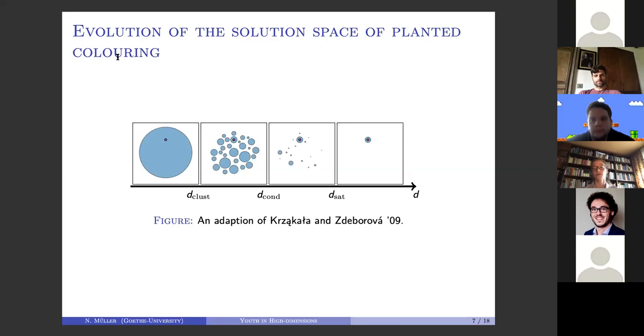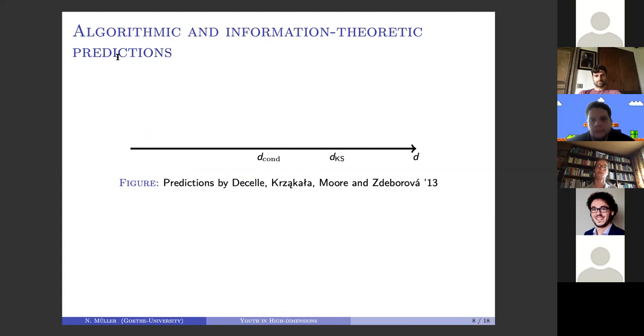At some other threshold, the last cluster not associated to the planted coloring vanishes. By looking at this picture, you can see how well you can guess this planted coloring. There are two thresholds which have been predicted in the article by Decelle, Krzakala, and Zdeborová.